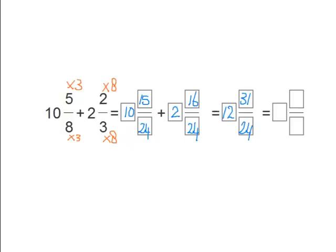But the 31 is bigger than 24, and we know that 24 over 24 equals 1. So we add the 1 to the 12 to equal 13. And 31 minus 24 is 7. We keep the original denominator of 24. So the answer is 13 and 7/24.